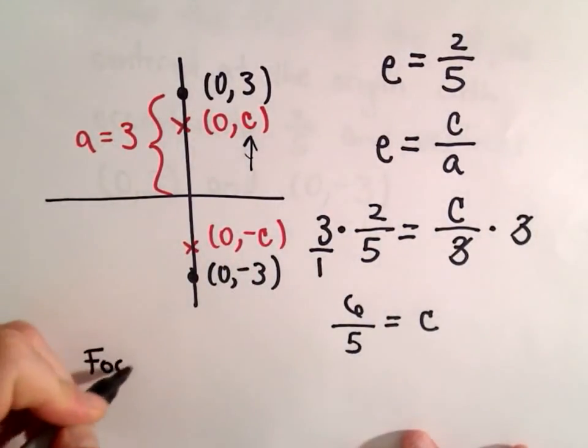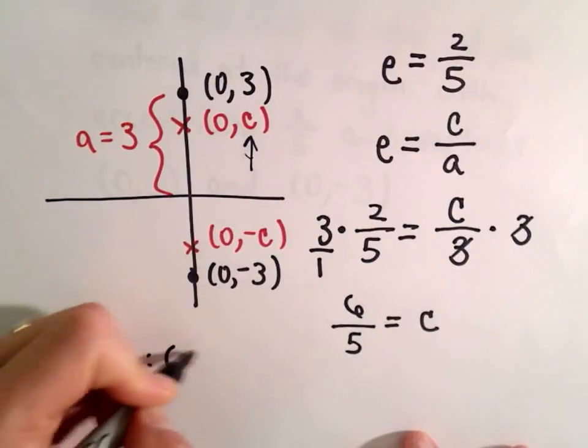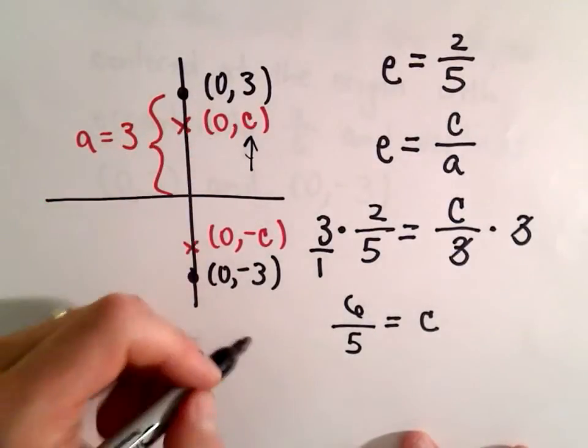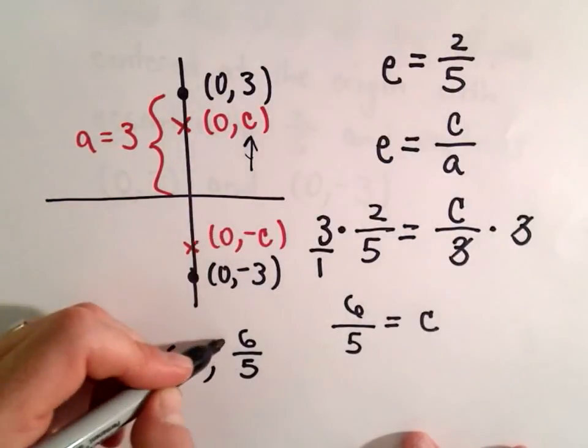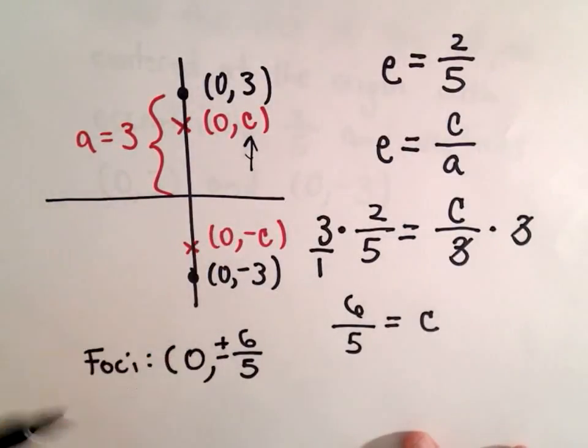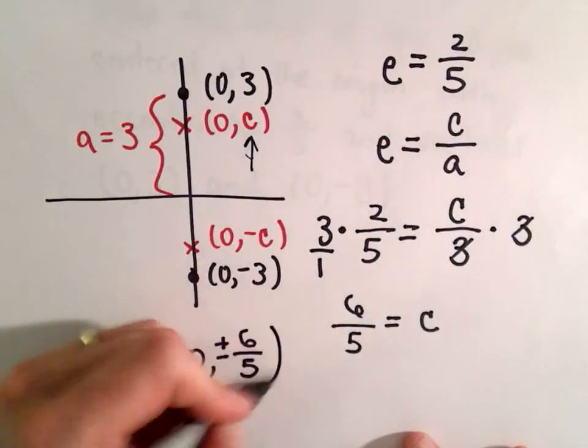And that's all we really need to know. Because now our foci will be at (0, 6/5) and also at (0, -6/5). So I'm just going to write that as (0, ±6/5).